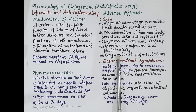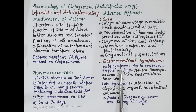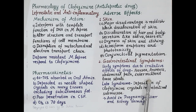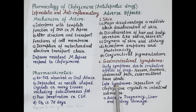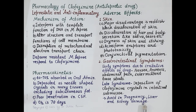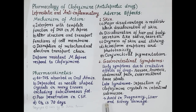Clofazimine also causes gastrointestinal symptoms. Early symptoms occur due to the irritative effect of the drug and include nausea, anorexia, abdominal pain, and intermittent loose stools. Late symptoms can also occur due to the deposition of clofazimine crystals in the intestinal submucosa. Clofazimine should be avoided during pregnancy and in patients with liver and kidney damage. This completes the pharmacology of clofazimine.